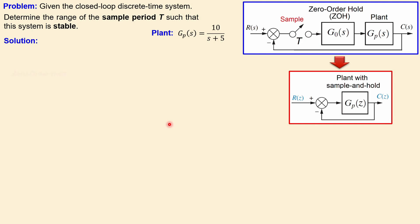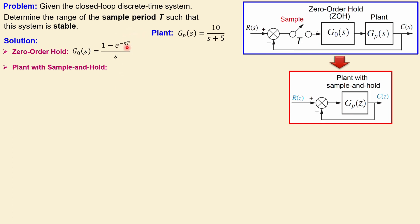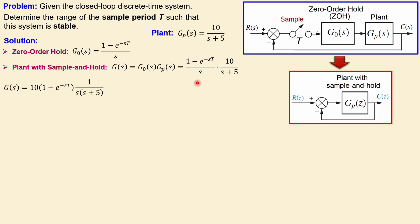Let's look at the solution. First, let's determine the transfer function of the zero-order hold, which is given by (1 - e^(-sT)) / s. Since we don't know what the sample period is, we keep it as T. The plant combined with the sample and hold gives us these two transfer functions multiplied together.